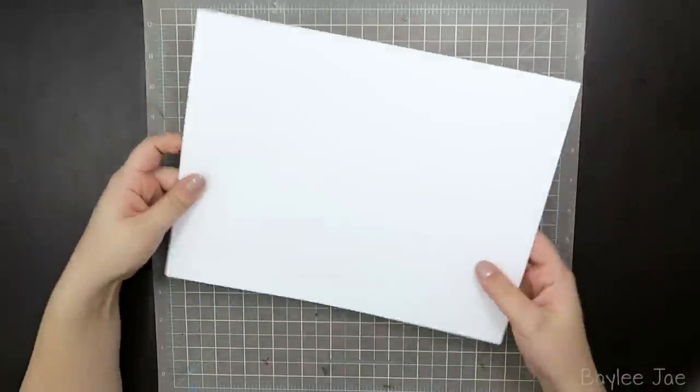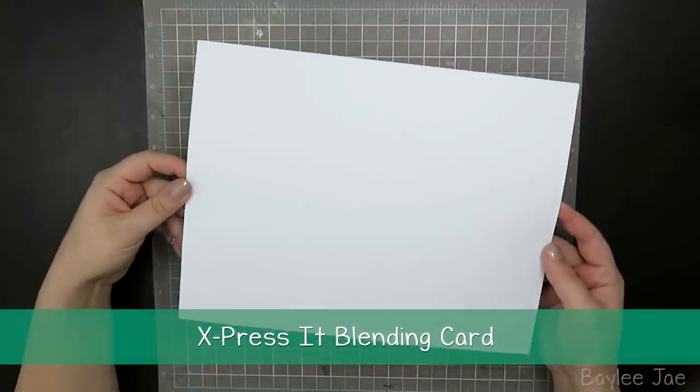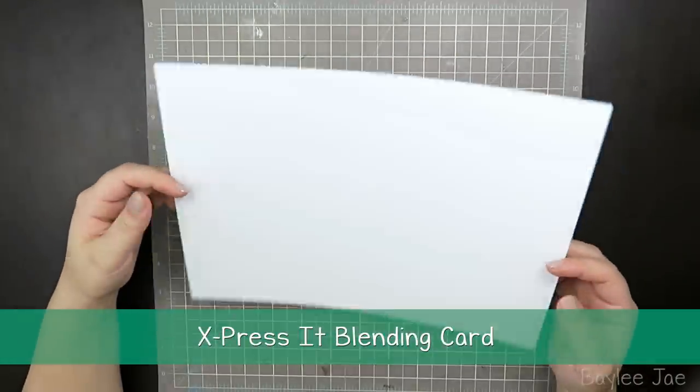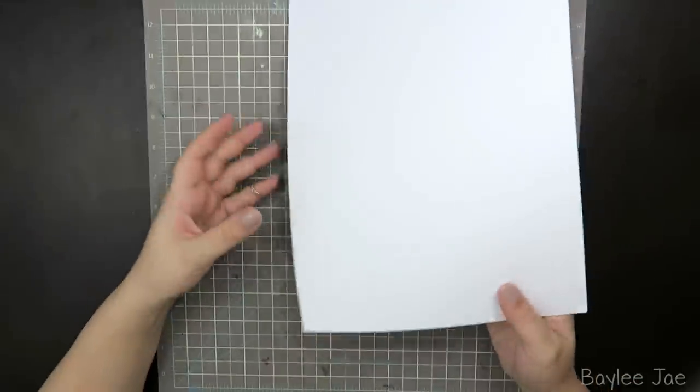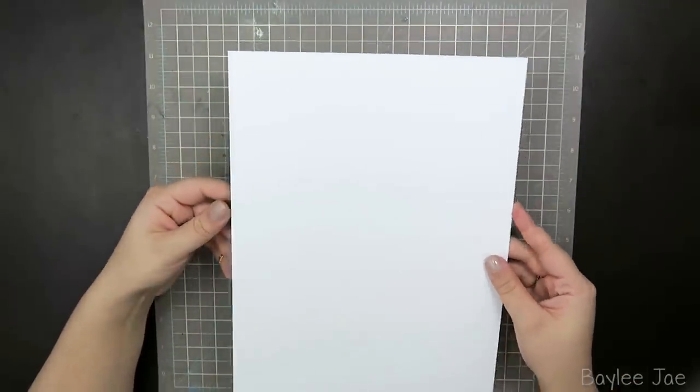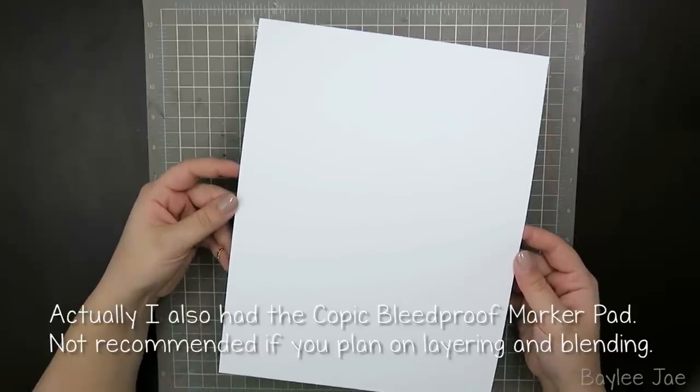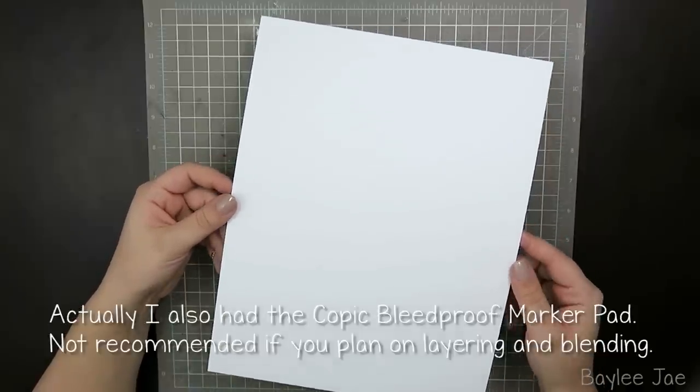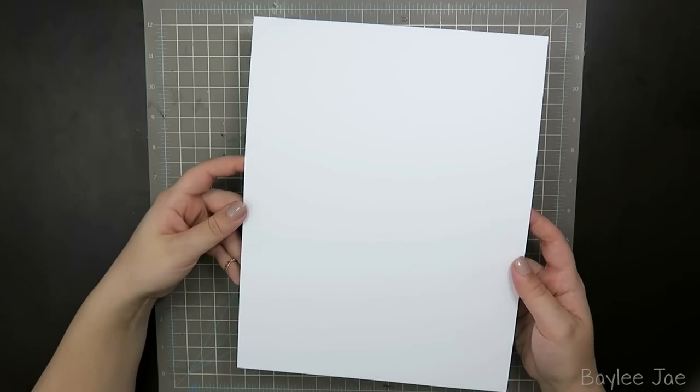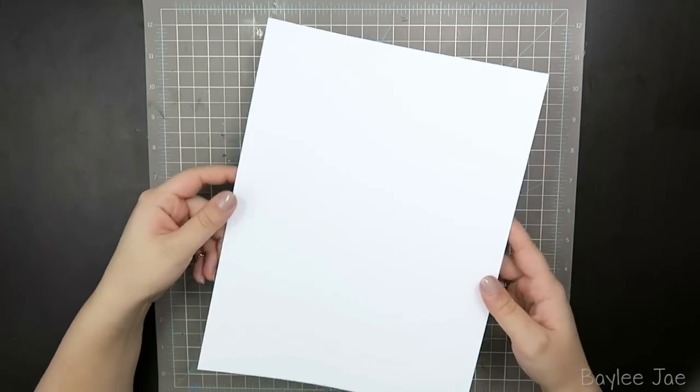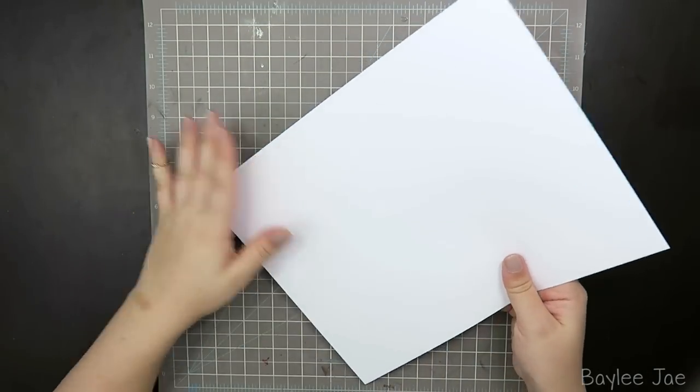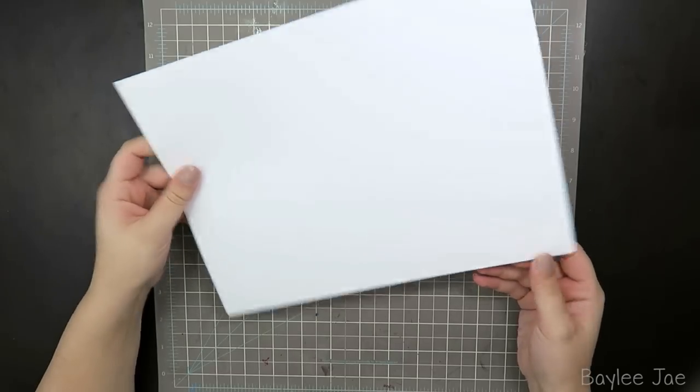For my marker illustrations I use Express It blending card. It's an eight and a half by eleven sheet of paper in white and it's like a cardstock and it works really nicely with markers. I was fortunate enough that this was actually the very first marker paper I ever used other than white printer paper and I just stuck with it ever since because it's that good. I haven't tried that many different papers but I really like this one so I'm sticking with it.